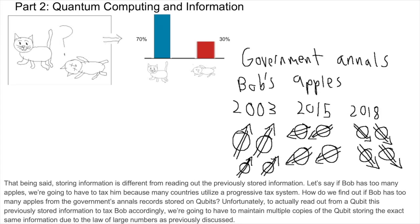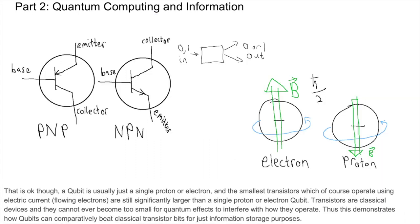That being said, storing information is different from reading out the previously stored information. Let's say if Bob has too many apples, we're going to have to tax him because many countries utilize a progressive tax system. How do we find out if Bob has too many apples from the government's annals record stored on qubits? Unfortunately, to actually read out from a qubit this previously stored information to tax Bob accordingly, we're going to have to maintain multiple copies of the records on qubits storing the exact same information due to the law of large numbers concept as previously discussed. That is okay though. A qubit is usually just a single proton or electron spin, and the smallest transistors, which of course operate using electric current flowing electrons, are still significantly larger than a single proton or electron qubit. Transistors are classical devices and they cannot ever become too small for quantum effects to interfere with how they operate. Thus, this demonstrates how qubits can comparatively beat classical transistor bits for just pure information storage purposes.